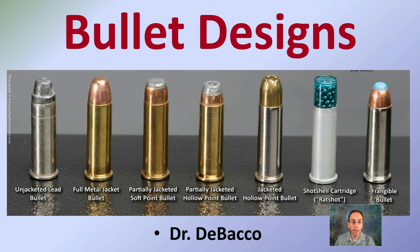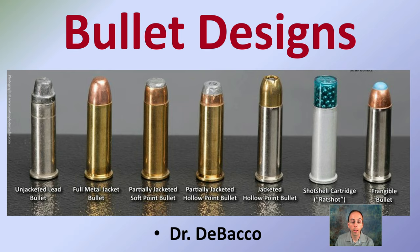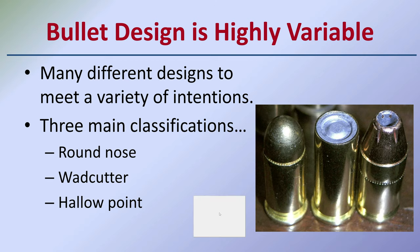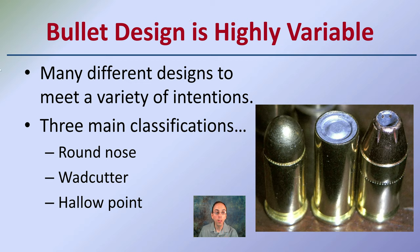Here we're going to cover different bullet designs. We can see a nice lineup showing visually how they look different, and we'll get into more detail about exactly what's going on, why they're designed this way, and what purpose they may serve. Bullet design is highly variable — many different designs to meet a variety of intentions. The three main classifications are round nose, wad cutter, and hollow point.